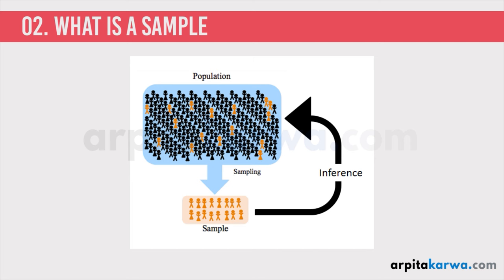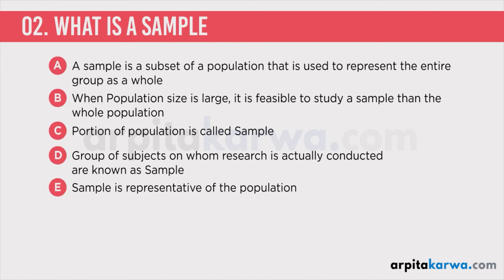Similar is the case with research. We study a sample instead of the whole population, and then the results of the analysis are generalized to the whole population, because the sample is representative of the population. Just like those two pieces we tasted to check whether they are properly cooked represent all the other pieces of vegetables in the pot, every participant who is part of our sample represents the population. So after doing the study on the sample, we can say that this data represents the population.